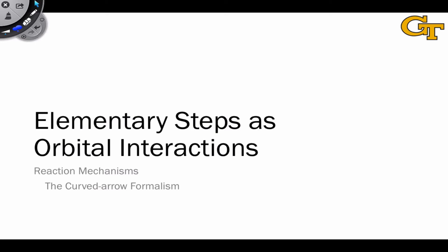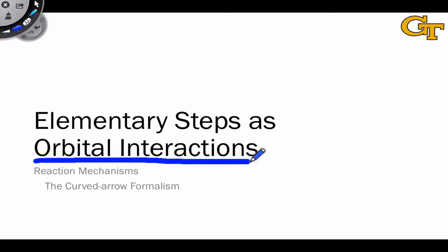What defines an elementary step within an organic reaction mechanism? What makes it elementary, and how do we know when we're looking at a step whether it corresponds to a single elementary step or not? The essential answer is that an individual elementary step within a mechanism can be associated with a single orbital interaction, or at most two orbital interactions happening simultaneously.